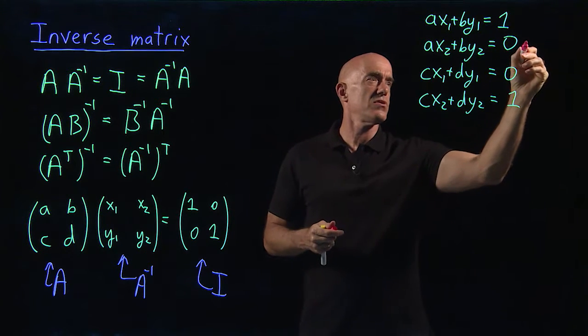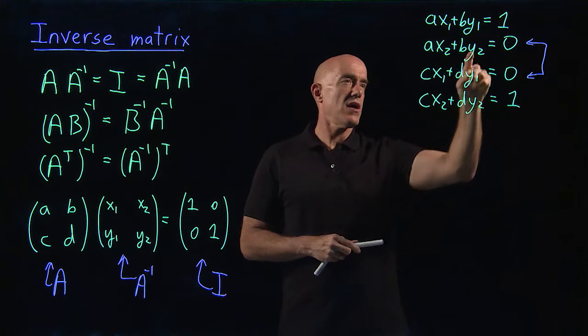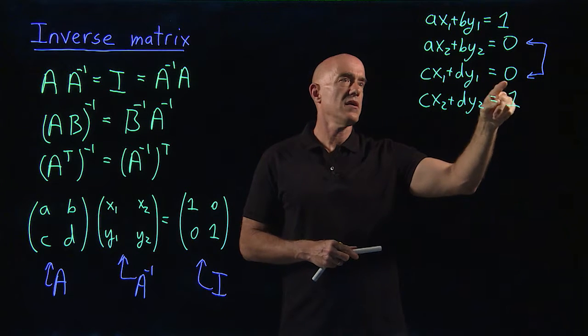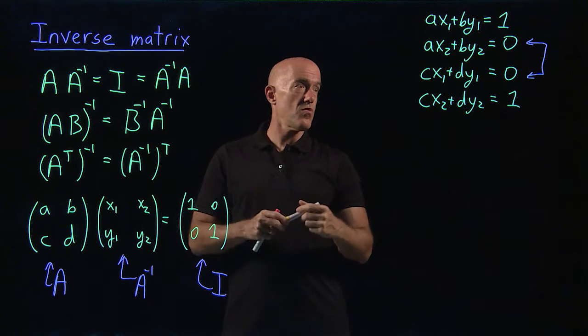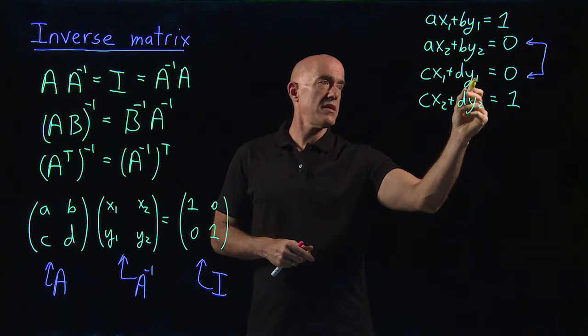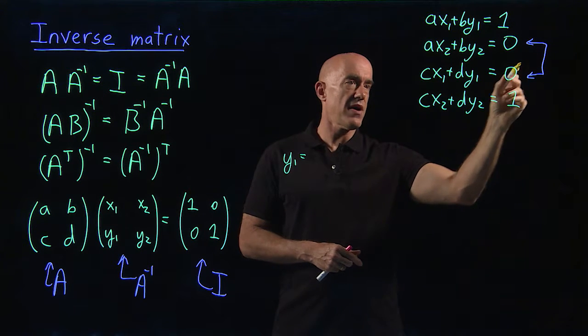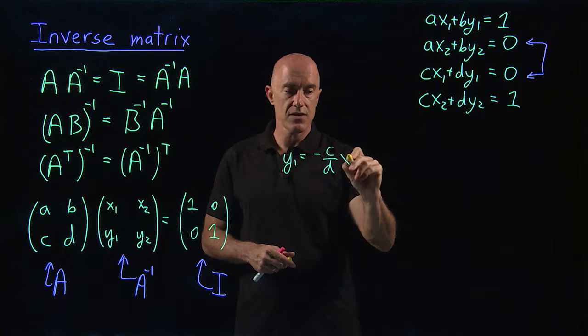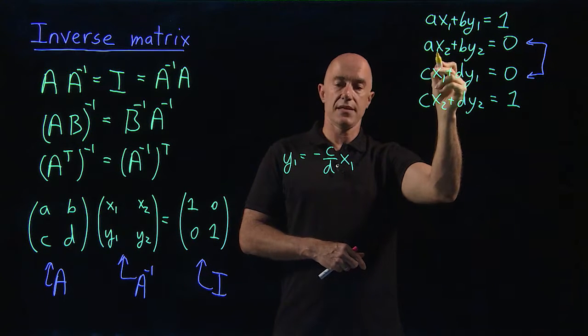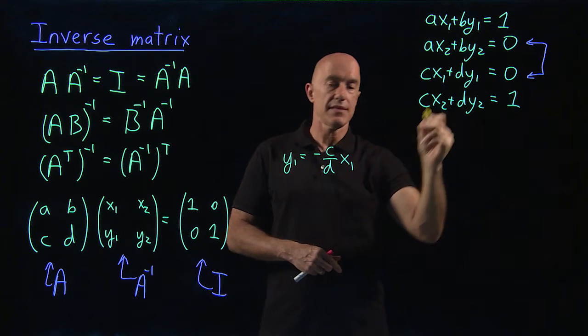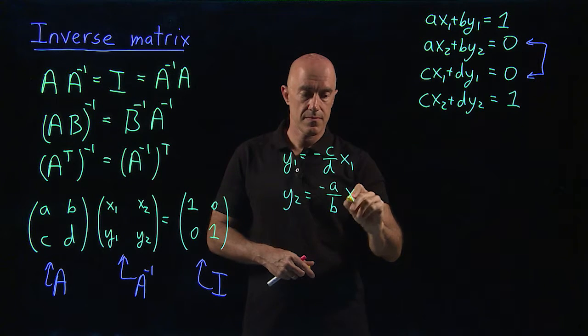I think the easiest way is to use these equations with the 0 on the right-hand side. Those are called homogeneous equations. And we can solve those equations for the y's. So we can solve for y1. We can solve for y2. So let's do that. I can put that over here. Solve for y1 first. So dy1 equals minus cx1. So then we solve for y1, so we get y1 minus cx1 divided by d, so minus c over d x1. And the second equation we can solve for y2. So we can subtract minus ax2 and divide by b, so minus a over b. So this is y2 equals minus a over b times x2.